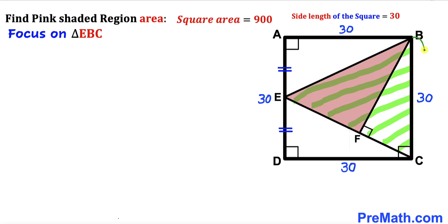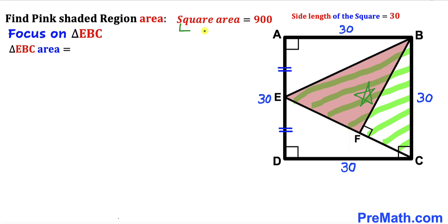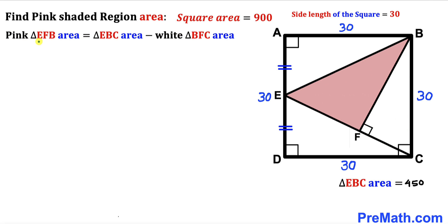Now let's focus on triangle EBC. We can see its base is the same as the side length, 30, and likewise its height equals the side length 30. So the area of triangle EBC is going to be half of the square area, which is half of 900. Therefore, the area of triangle EBC turns out to be 450 square units.